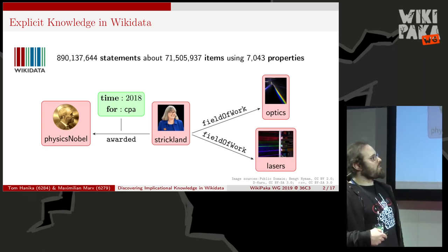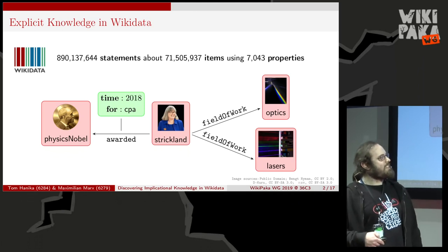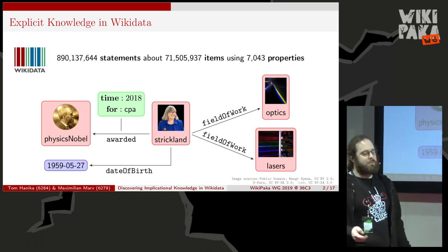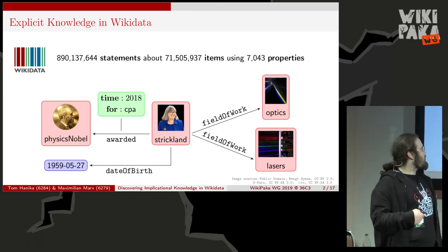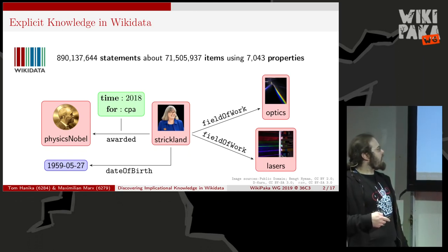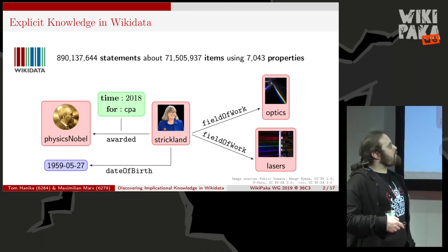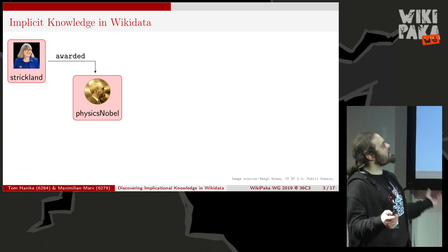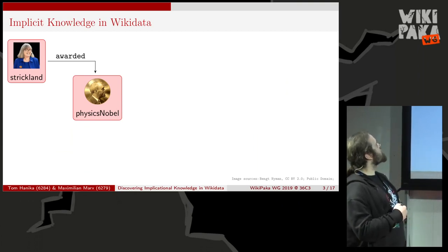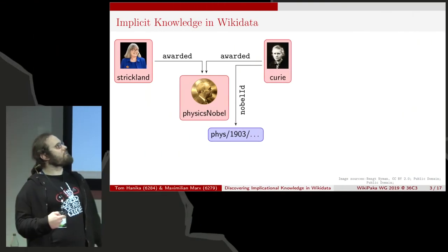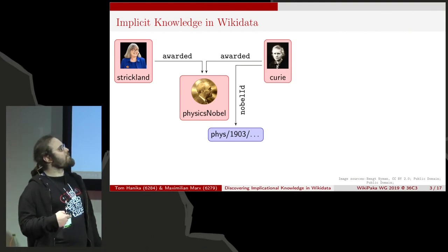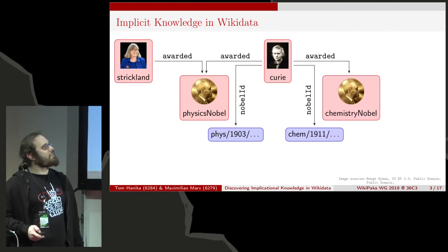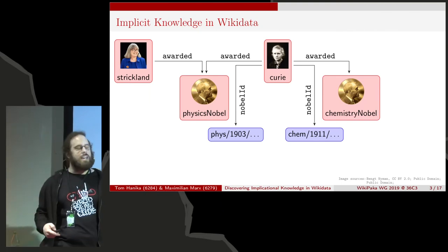There's also a bit more. We know that Donna Strickland has field of work optics and also field of work lasers — so we can use the same property to connect an entity with different other entities. We don't even have to connect to entities; we can have her date of birth, which is 1959, which is just a plain date and not an entity.